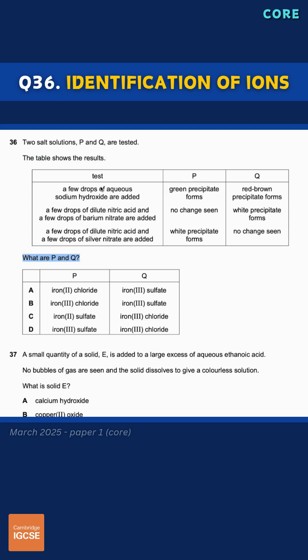For substance P, a few drops of aqueous sodium hydroxide are added, forming a green precipitate. That suggests that the solution contains iron-2 ions. And when a few drops of dilute nitric acid and silver nitrate are added, a white precipitate forms, which tells us that it contains chloride ions.